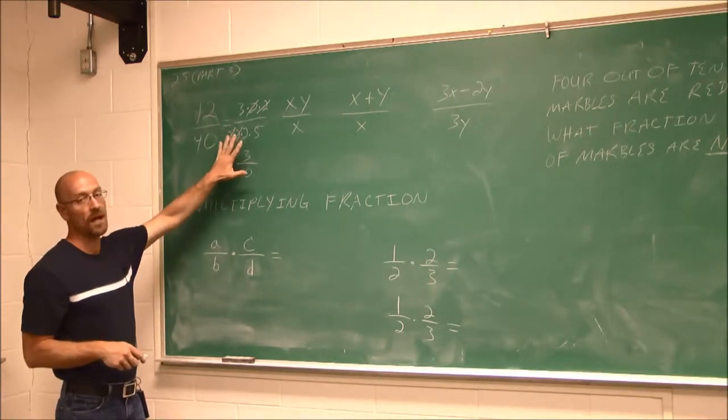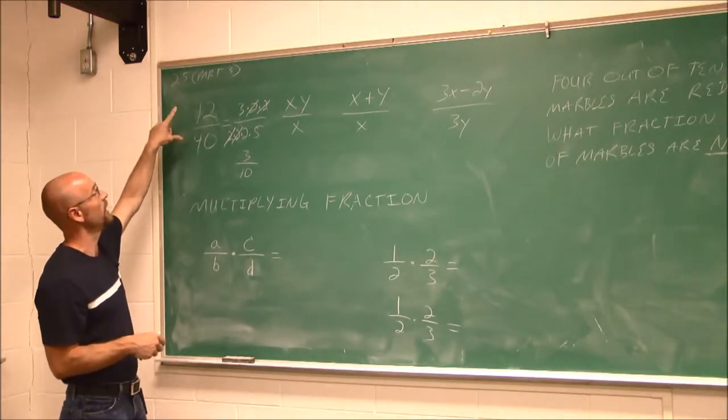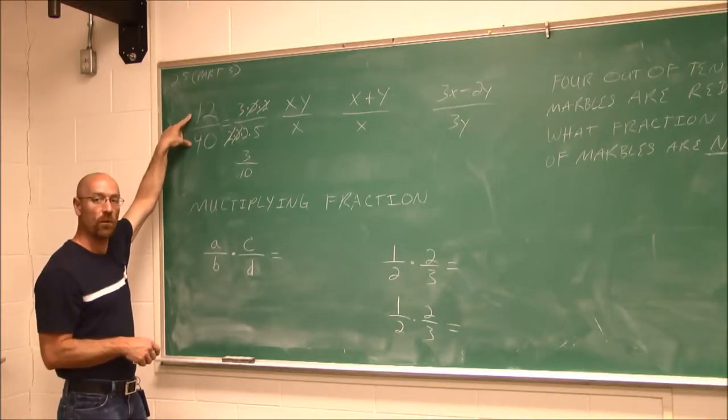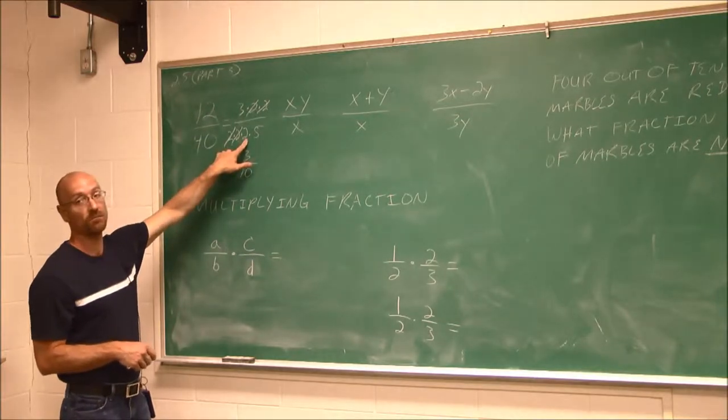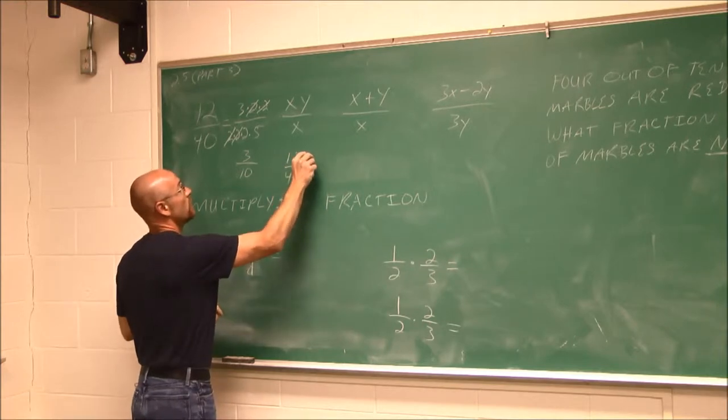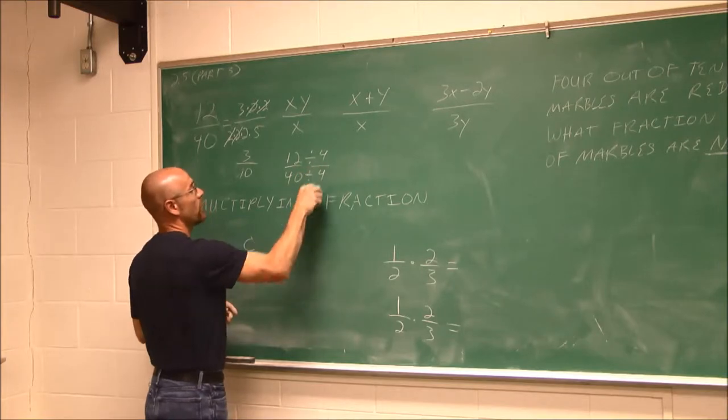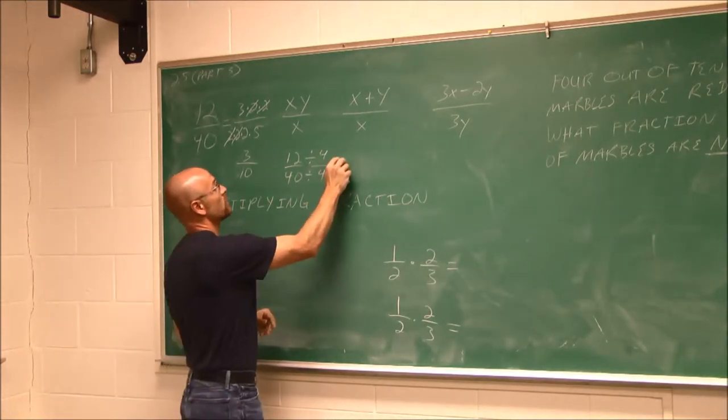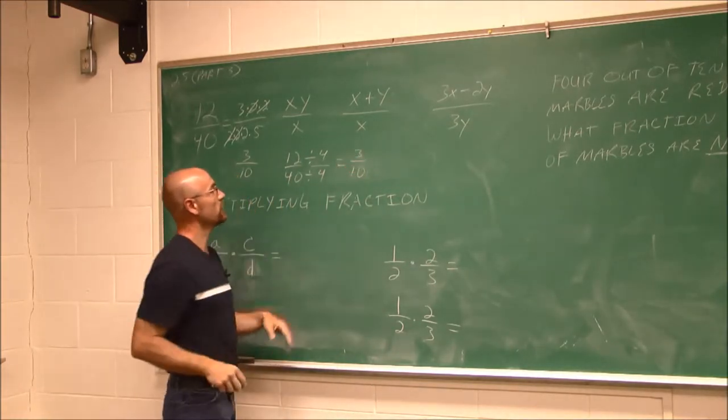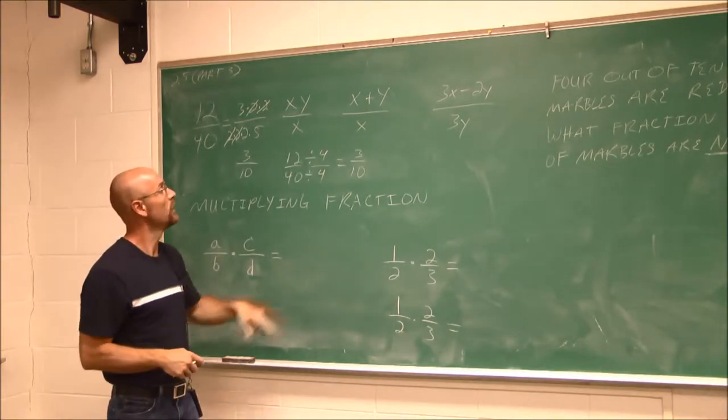Sometimes there's a quicker and faster way to come to this conclusion. Maybe you can look at these numbers and say, I know both are divisible by 4. That's an alternative method. You can say 12 fortieths, divide the top by 4, divide the bottom by 4. 12 divided by 4 is 3, 40 divided by 4 is 10. Essentially we're dividing by that special 1, 4 over 4. We get the same result.